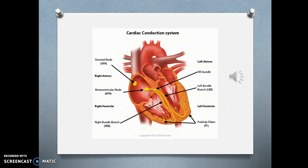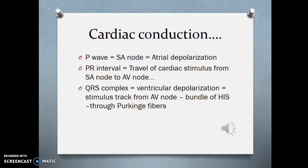The sinoatrial node is the beginning of the cardiac conduction system, also called the sinus node or SA node. When someone's in a normal sinus rhythm it means all heartbeats are being initiated by the sinoatrial node. From there you go to the atrioventricular node, bundle of His, the bundle branches, and the Purkinje fibers. The P wave represents atrial depolarization and the SA node firing. The PR interval represents travel of the cardiac stimulus from the SA node to the AV node, and the QRS complex represents ventricular depolarization.